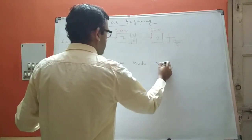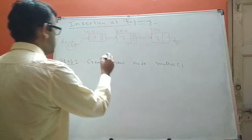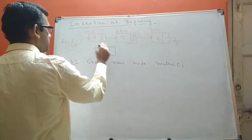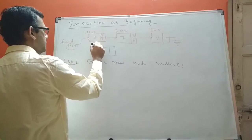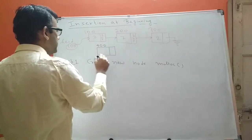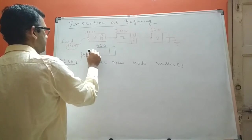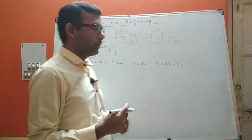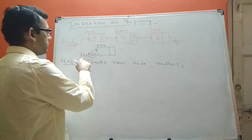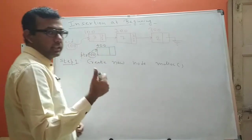Once you create a new node using malloc, this node comes into existence with a data part and a link part. Let's say this node has an address of 400. That address 400 will be stored in a pointer variable called PTR. PTR is pointing to this new node, and the address of the node is contained in PTR. That is step one.